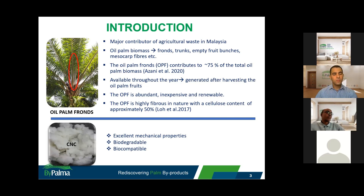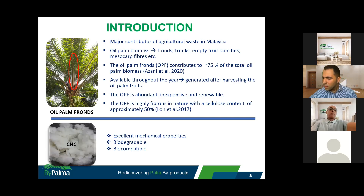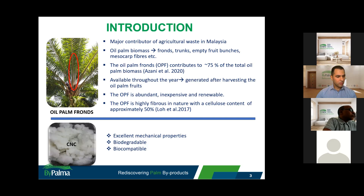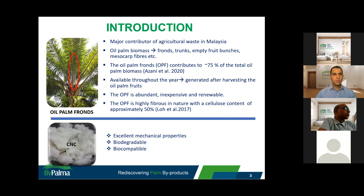OPF is available throughout the year, generated after harvesting the oil palm fruits. It is abundant, inexpensive, and renewable. The main reason it is suitable for producing cellulose nanocrystals is because it is highly fibrous in nature with a cellulose content of approximately 50%. Cellulose nanocrystals, or CNC, have become one of the widely researched topics in the lignocellulose area, owing to excellent mechanical properties, biodegradability, and biocompatibility, making them suitable for various applications.